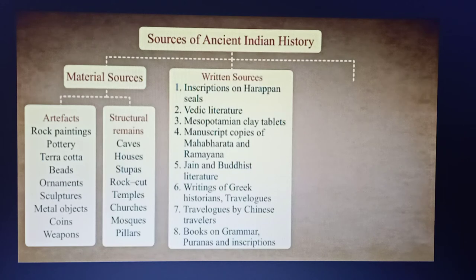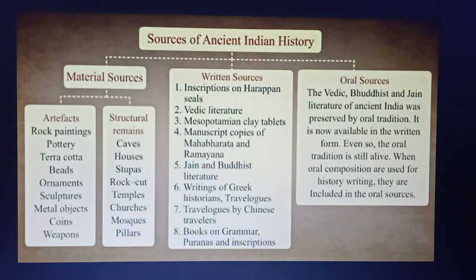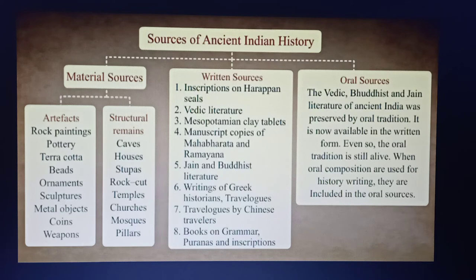Written sources: The Vedic, Buddhist and Jain literature of ancient India was preserved by oral tradition and is now available in written form. Even so, the oral tradition is still alive. When oral compositions are used for history writing, they are included in the oral sources.